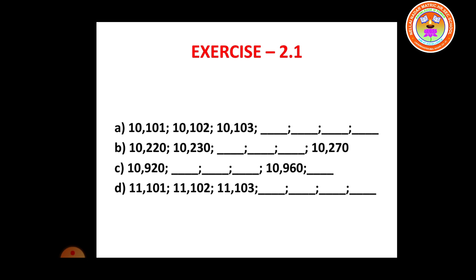For the second question: 10,220 and the next one is 10,230 — the difference between them is 10. So we add 10 each time: 10,230 plus 10 gives 10,240, then 10,250, then 10,260, then 10,270. That's correct.